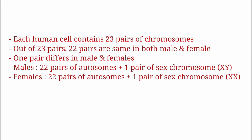Each human cell contains 23 pairs of chromosomes. Out of 23 pairs, 22 pairs are the same in both males and females — these are called autosomes. One pair differs between males and females and is called the sex chromosome. In males: 22 pairs of autosomes plus one pair of sex chromosomes XY. In females: 22 pairs of autosomes plus one pair of sex chromosomes XX.